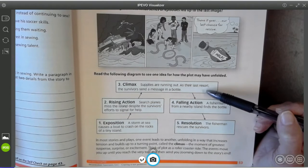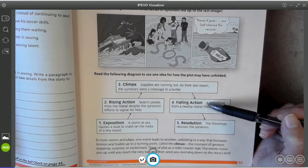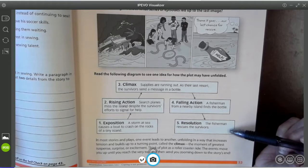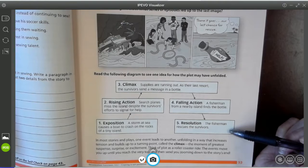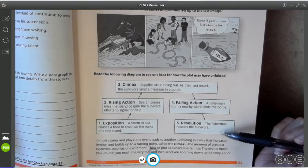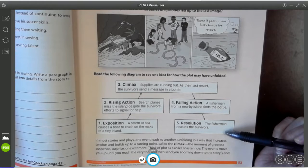And then this takes us to the falling action, which is events that lead to solving the conflict. A fisherman from a nearby island finds the bottle. And then the resolution is the final outcome. It tells what happens to the characters after the conflict is solved. So we're going to assume that the fisherman rescues the survivors.